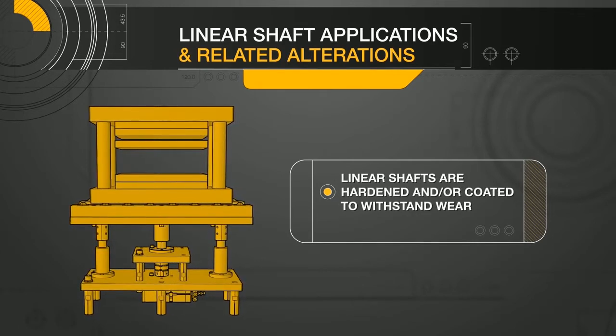Linear shafts, in conjunction with linear bushings, are primarily used to transport a load. Because of this, most of Misumi's linear shafts are hardened and/or coated to withstand the natural wear from the application.